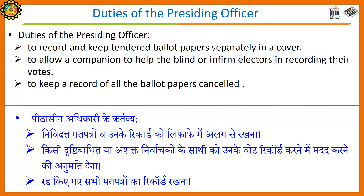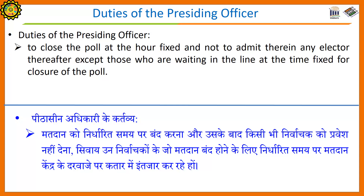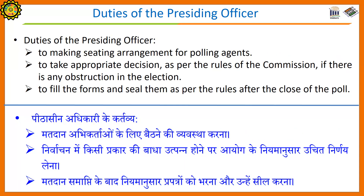To allow a companion to help the blind or infirm electors in recording their votes. To keep a record of all the ballot papers cancelled. To close the poll at the hour fixed and not to admit any electors thereafter except those who are waiting in the line at the time fixed for closure of the poll. To make seating arrangement of polling agents. To take appropriate decision as per the rules of the commission if there is any obstruction in the election. To fill the forms and seal them as per the rules after the close of the poll.